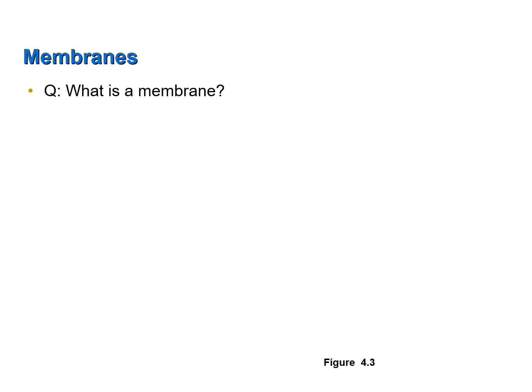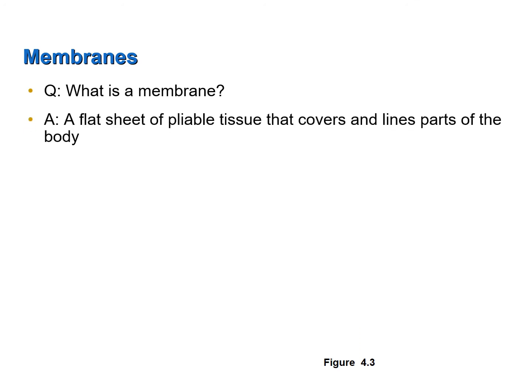So what is a membrane? A membrane is a flat sheet of pliable tissue that covers and lines parts of the body. When we say pliable tissue, we mean that it's flexible — it can be bent or molded to the shape of an organ or a surface.